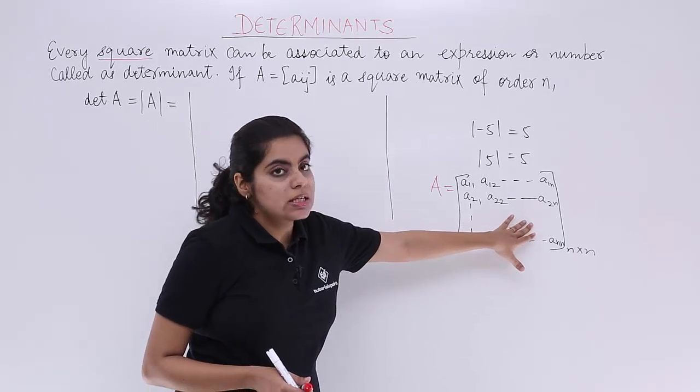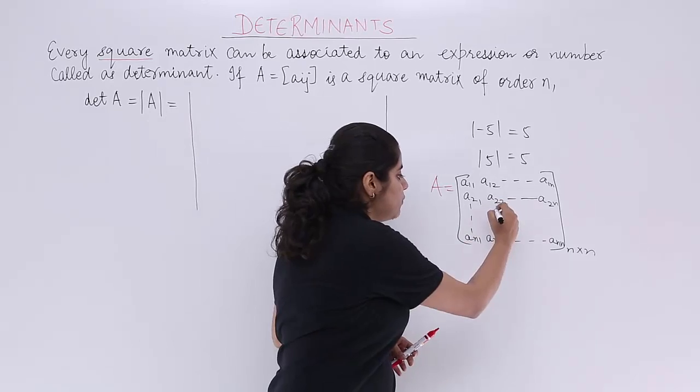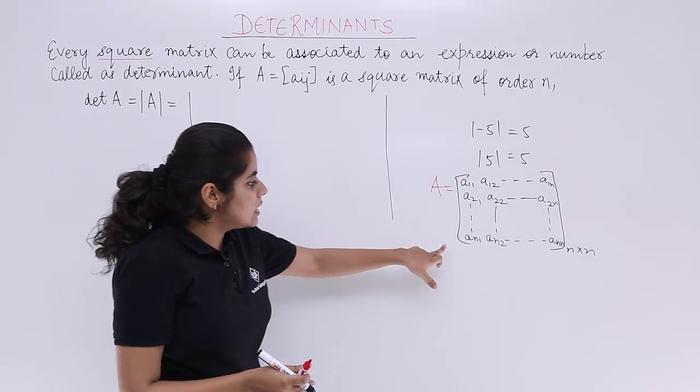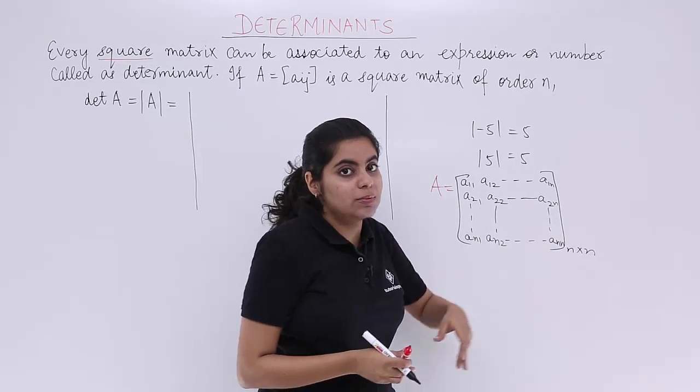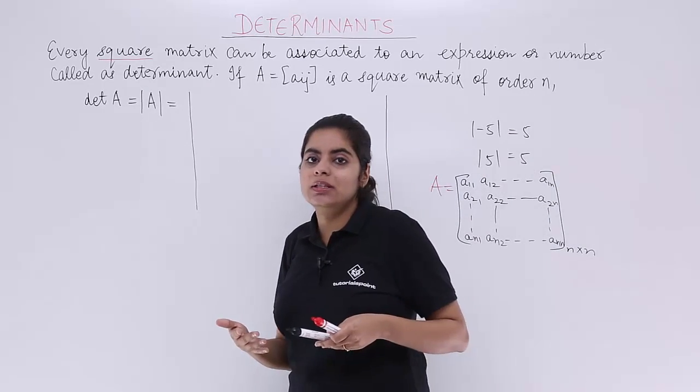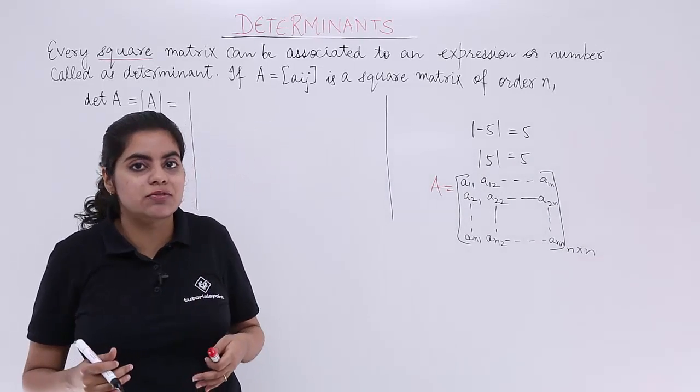The only difference would be you have to write everything like that only, you have to follow the same thing. The difference is the square brackets are not there this time. This time what we have is the parallel lines, that is it. And how to compute the value, that we will be seeing in the successive videos.